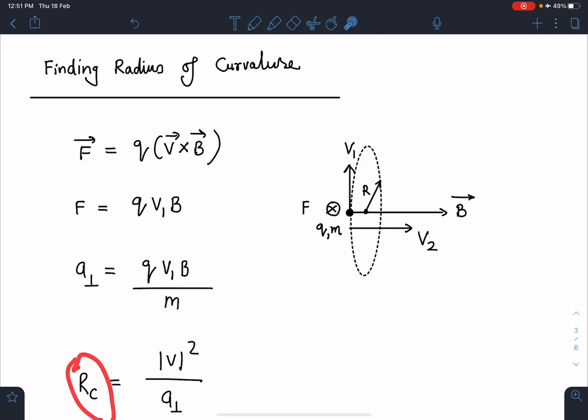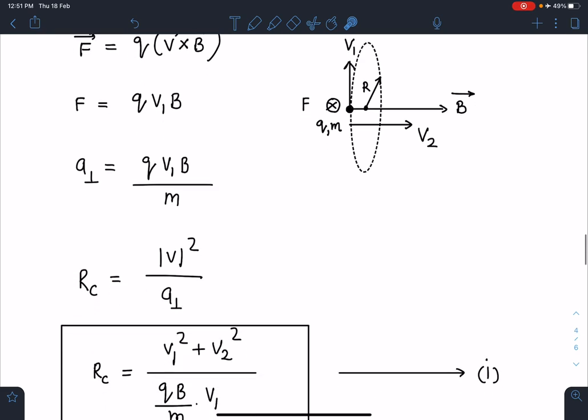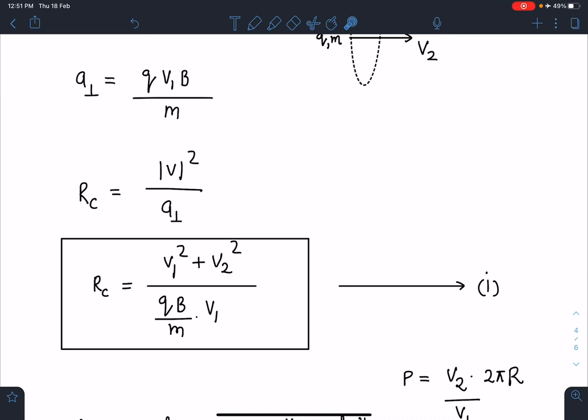From here, my radius of curvature I can write as v² by a_perpendicular. The total speed at the initial moment is √(v₁² + v₂²) as they are mutually perpendicular. So this will become (v₁² + v₂²)/(qvB/m).